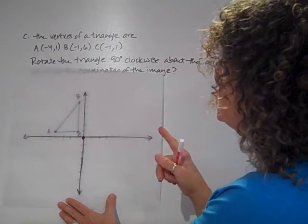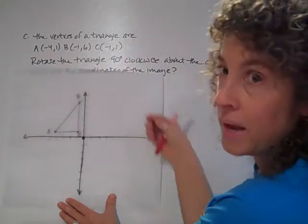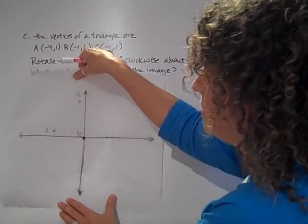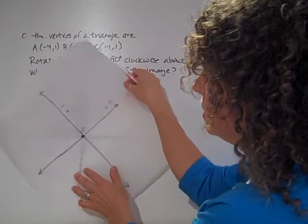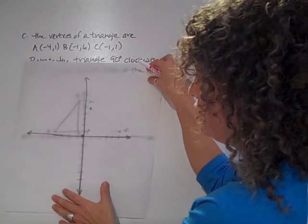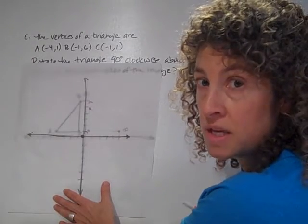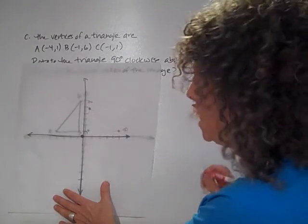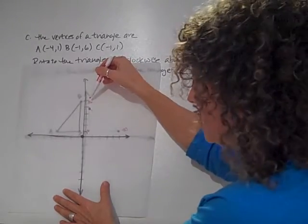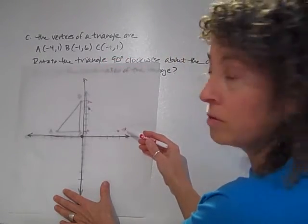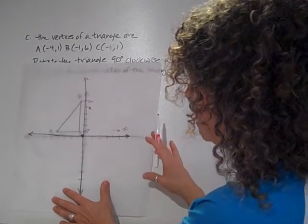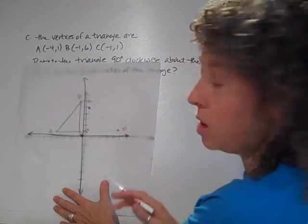They want us to do 90 degrees clockwise. So clockwise, I'm going to turn my paper clockwise 90 degrees. So 90 degrees is going to be one turn of the paper this way. And what this is going to do for me is it's going to let me see what the new figure should look like. So here I can see that A now is going to be at the top of my figure, B is going to be over here on the right, and C will be down here on the left.